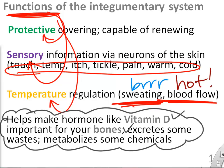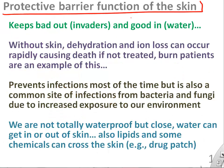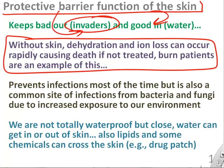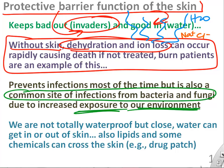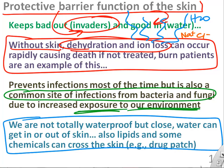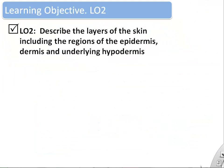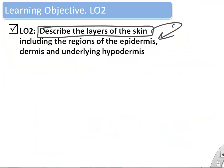Vitamin D is essential for bones and it begins to be made in the skin. One of the things you might not think about is what an important barrier your skin is. If you didn't have skin, you would dehydrate and lose ions — this occurs in patients with severe burns who lose part of their skin and can actually dehydrate and die. You're continually exposed to substances through your skin; things can also get in, so drug patches work that way. You also lose a little bit of water through your skin even besides sweating.